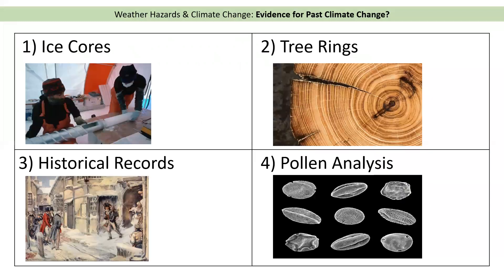To recap, there are four pieces of evidence for how we know the climate was very different in the past: we can look at ice cores, tree rings, historical sources or historical records, and pollen analysis.